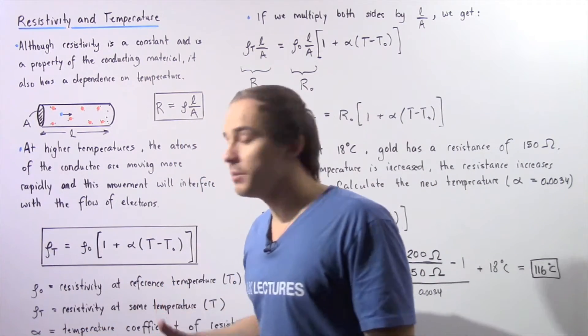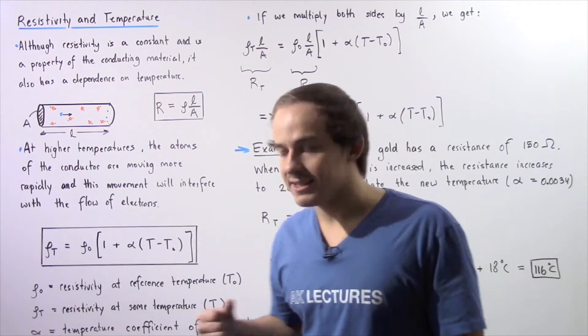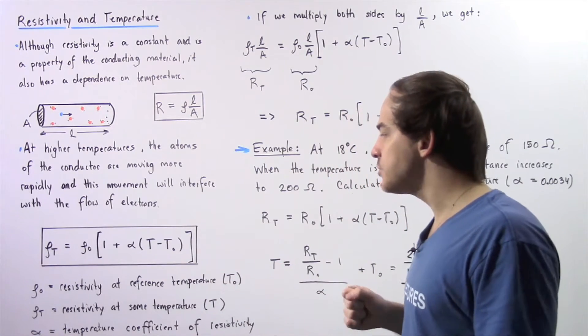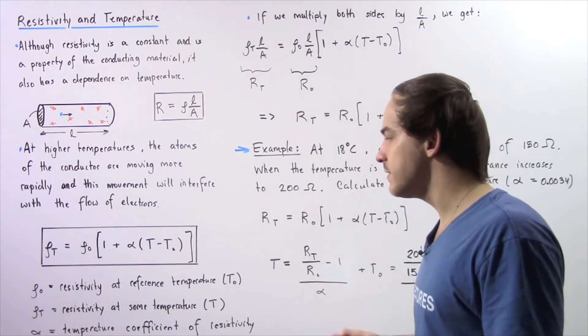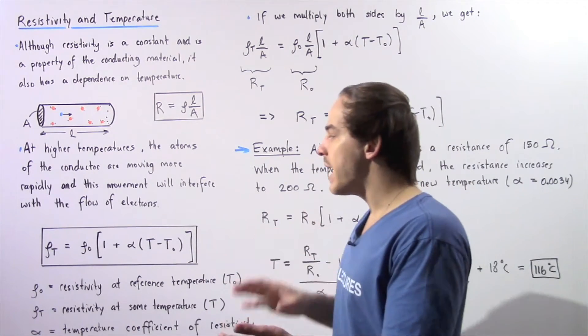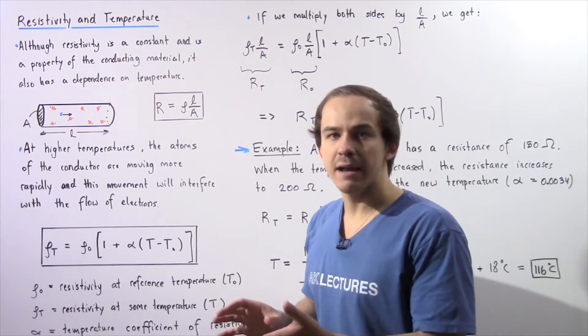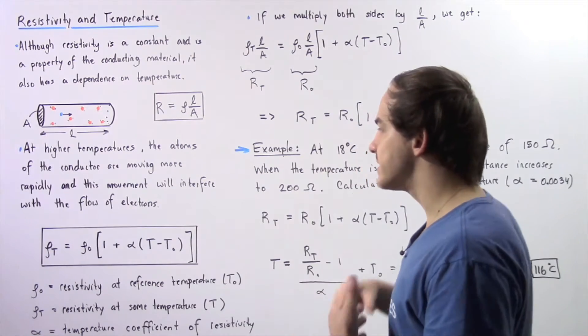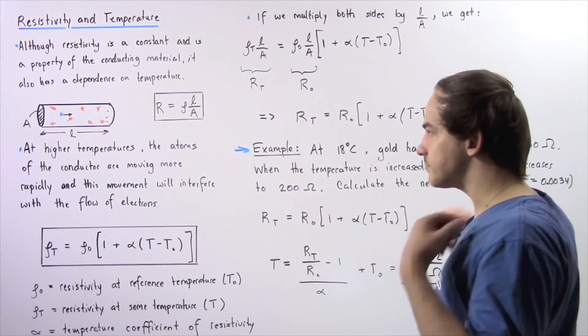And our α is simply a constant — it is the temperature coefficient of resistivity that depends on the type of substance that we are examining.